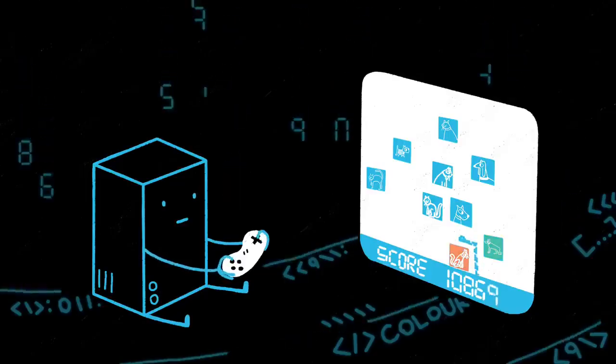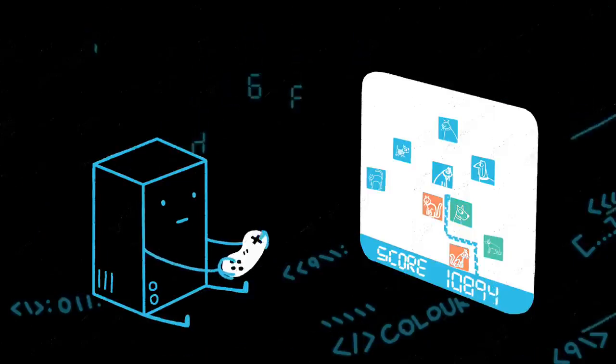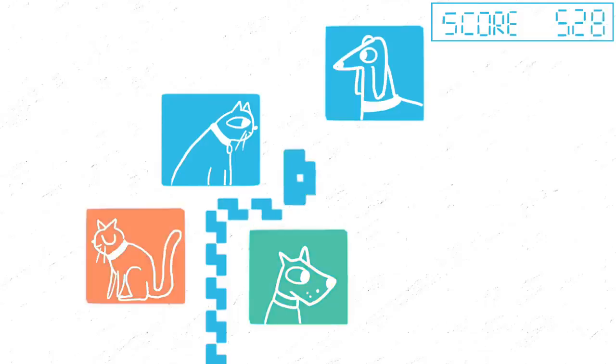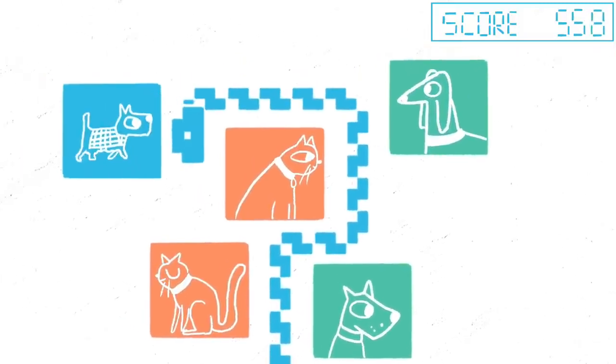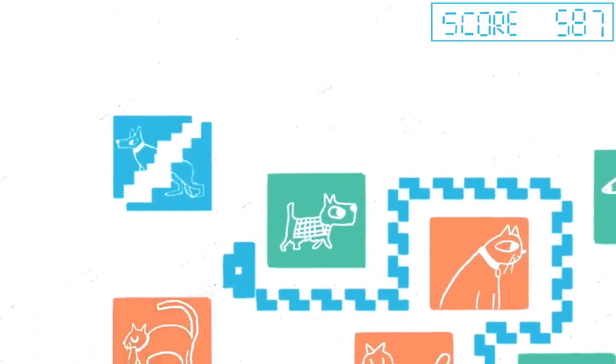One example of a simple, yet highly effective algorithm is to find the optimal line separating cats from dogs. When the computer sees a new picture, it checks which side of the line it falls on and then says either cat or dog.